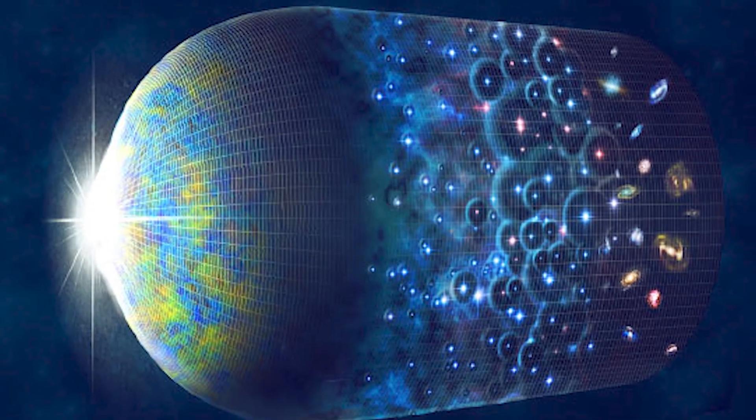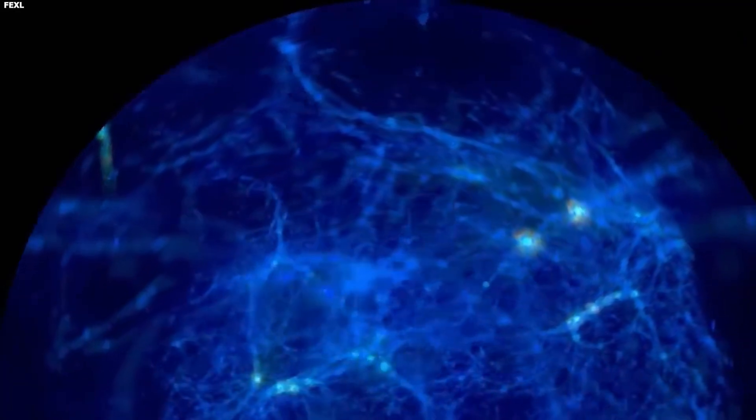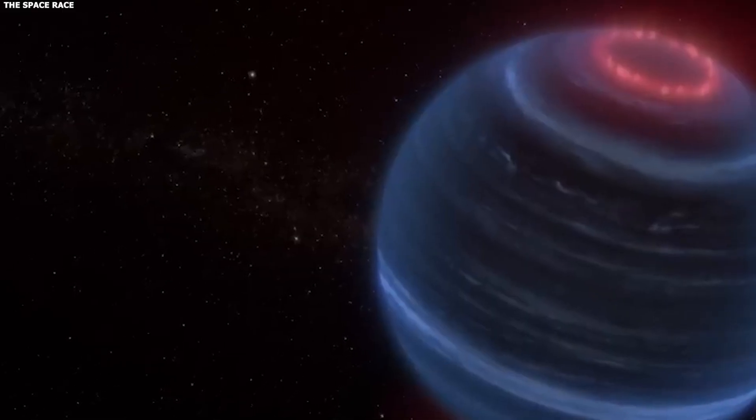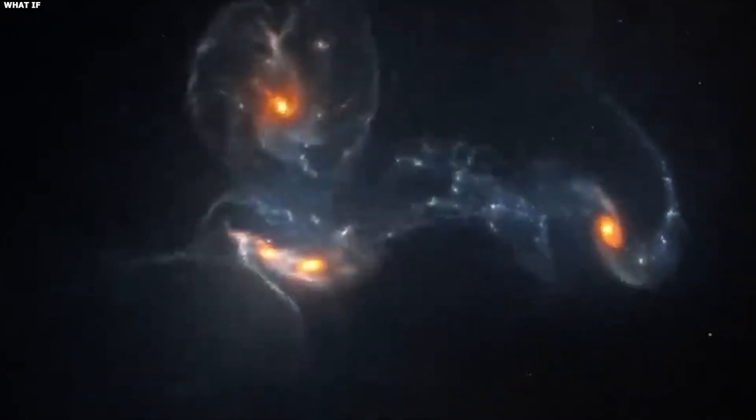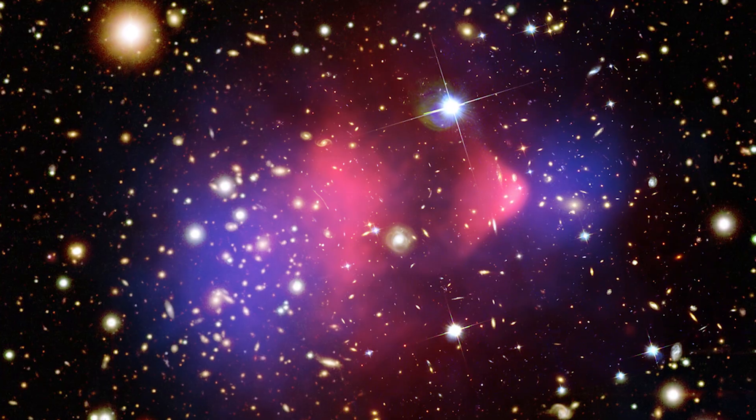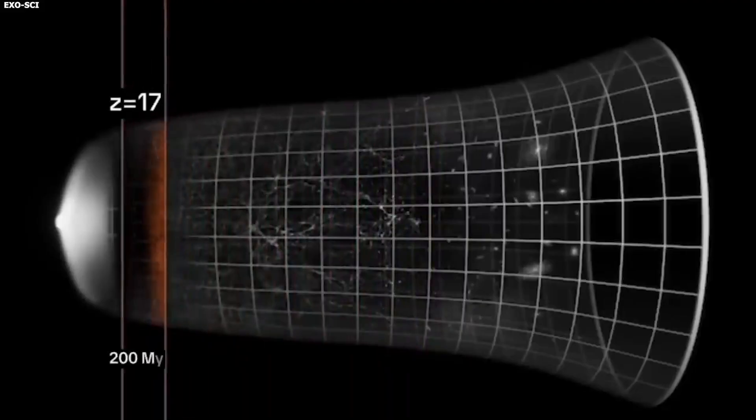Lambda CDM also predicted that if you zoom out far enough, the universe should look smooth and uniform. No matter which direction you look, you should see roughly the same amount of stuff, same density of galaxies, same distribution of matter. This is called the cosmological principle, and it's the foundation of modern cosmology.